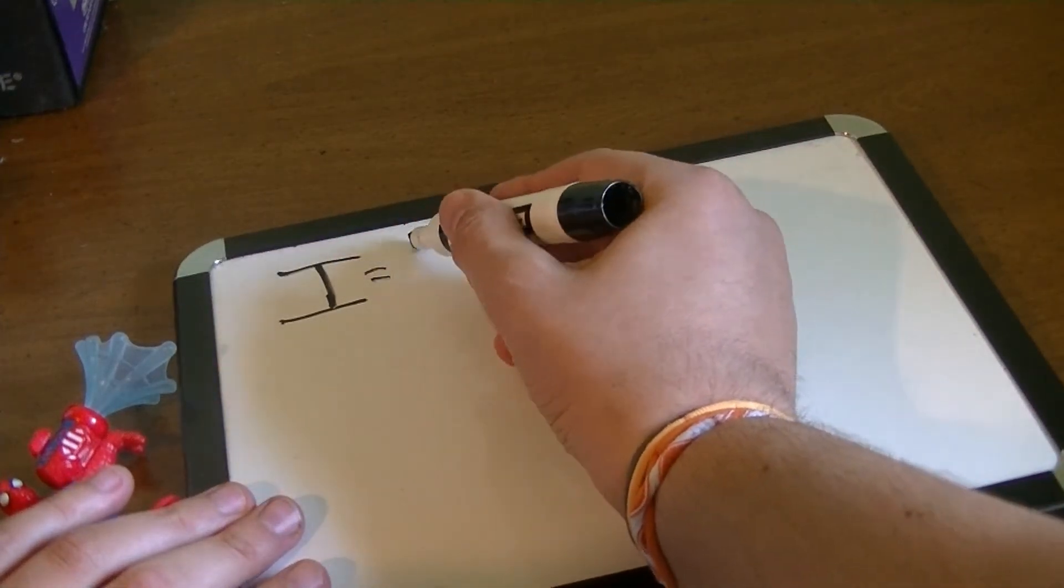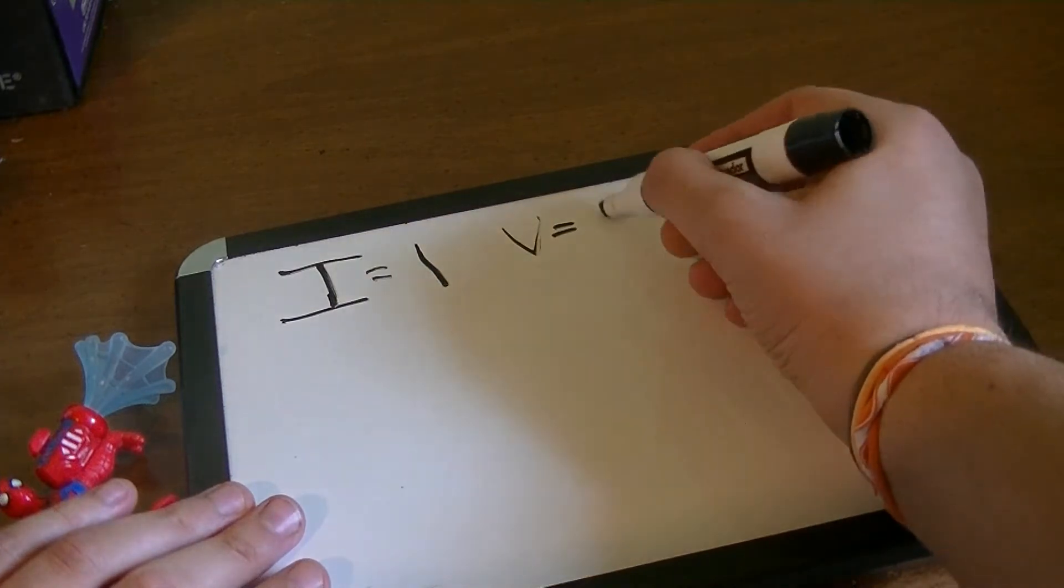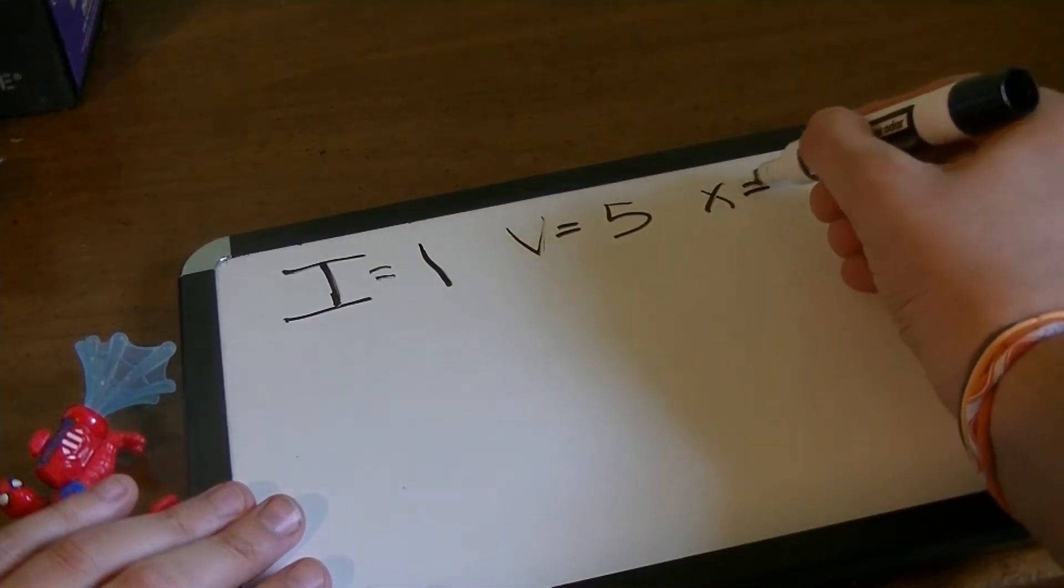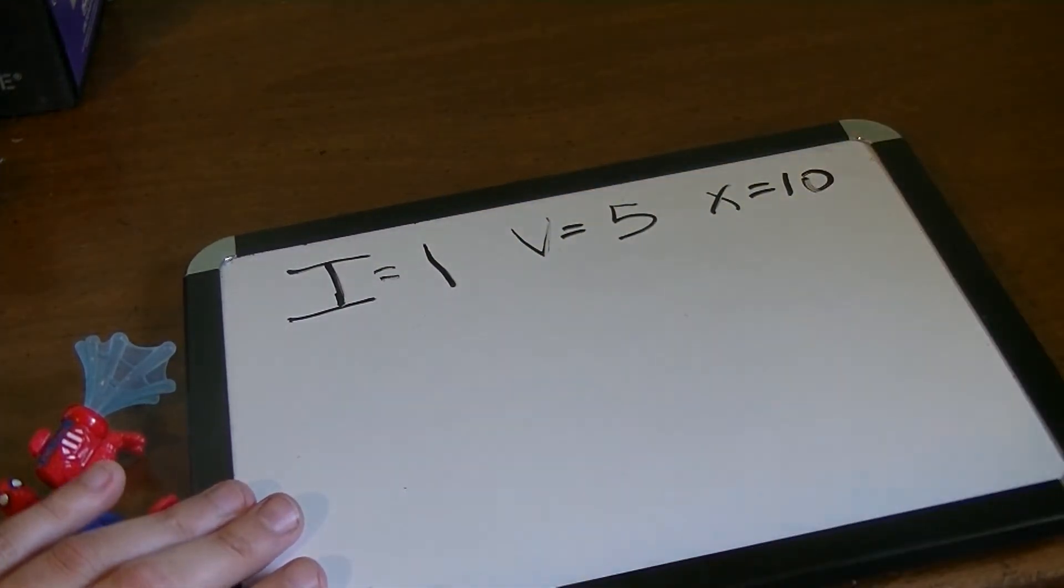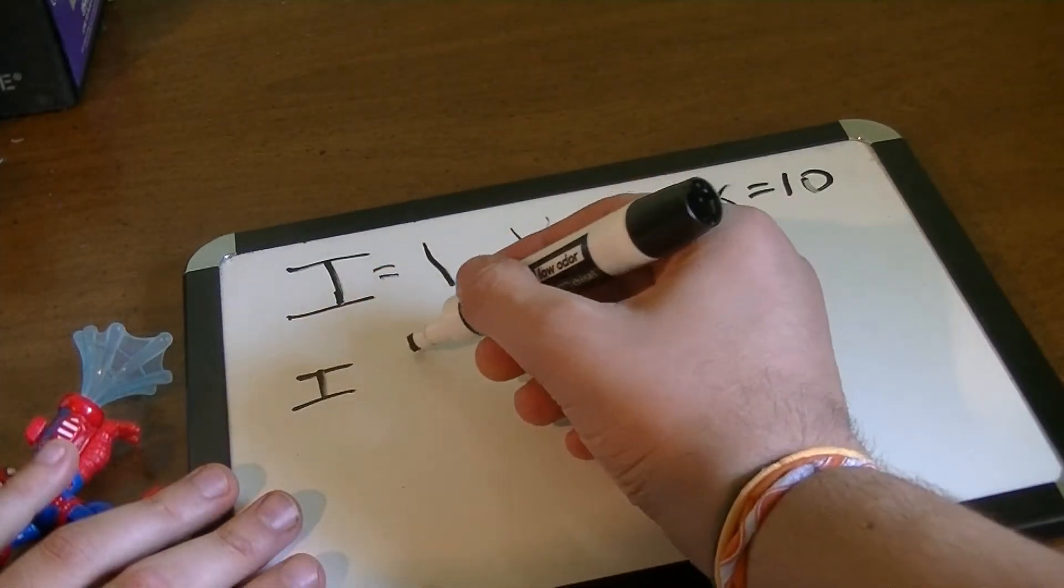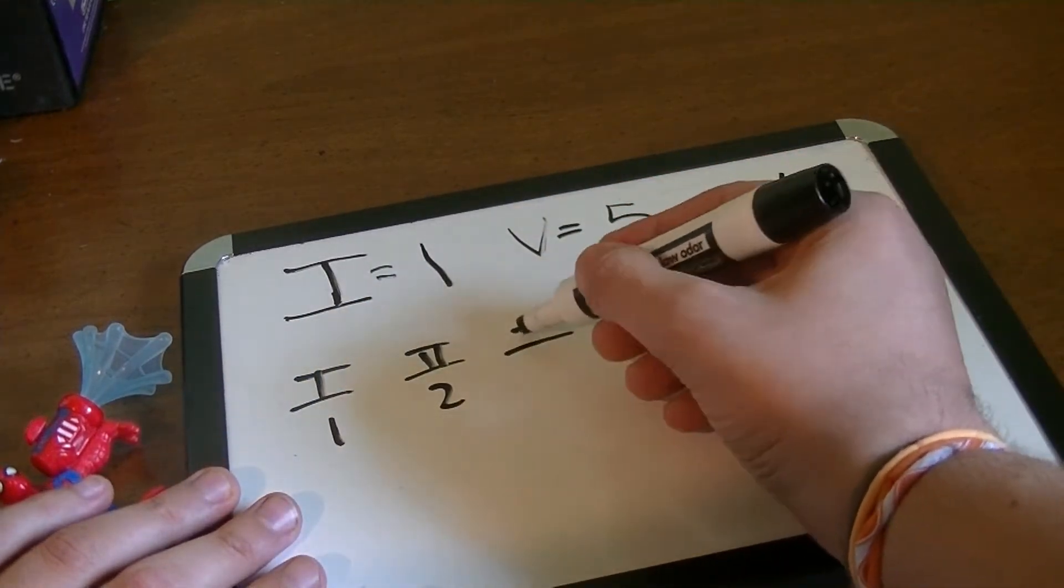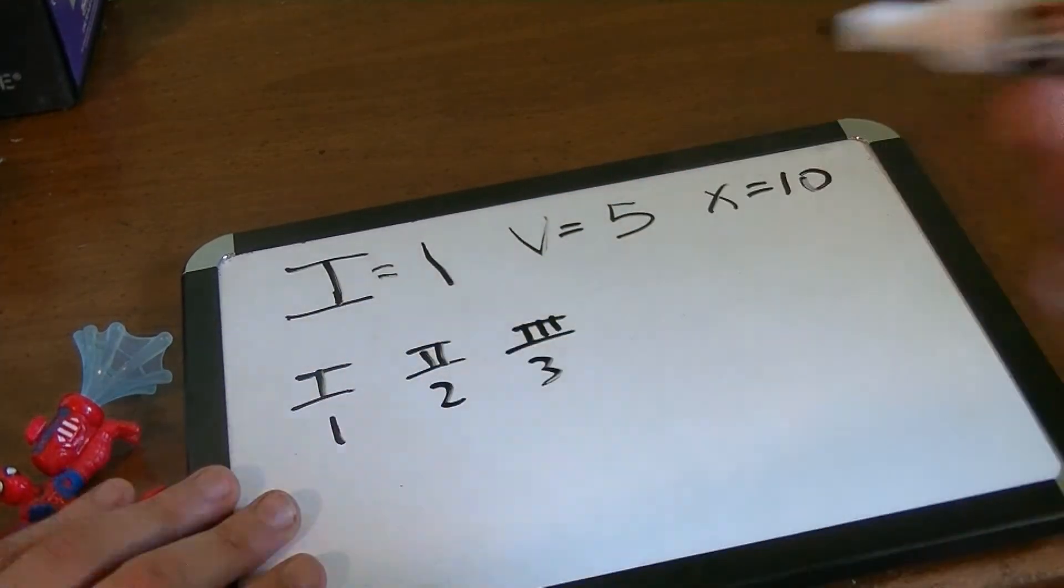I equals 1, V equals 5, and X equals 10. I'm just going to show you the basic ones today. So I is one, two I's is two, three I's is three. Now here's where it changes a little bit.